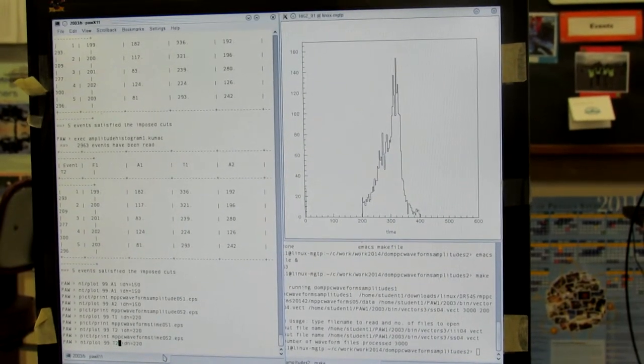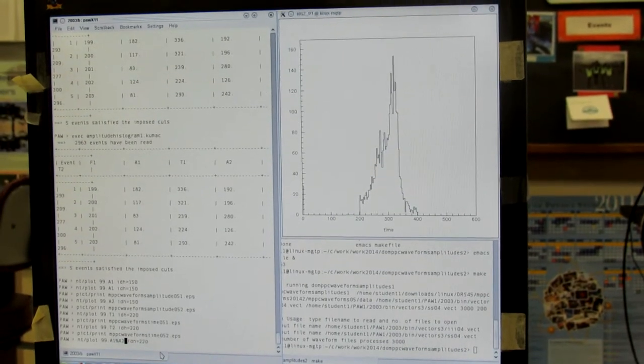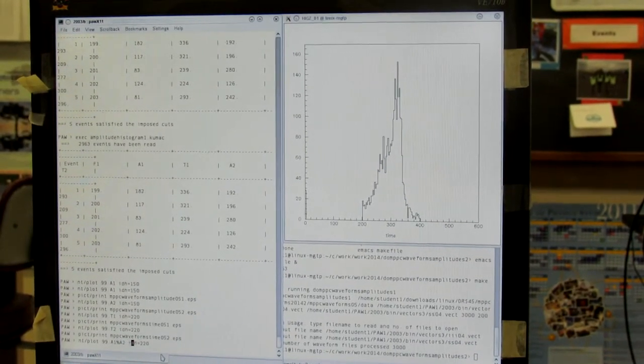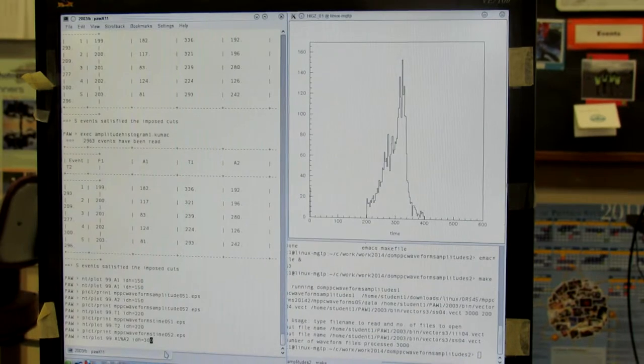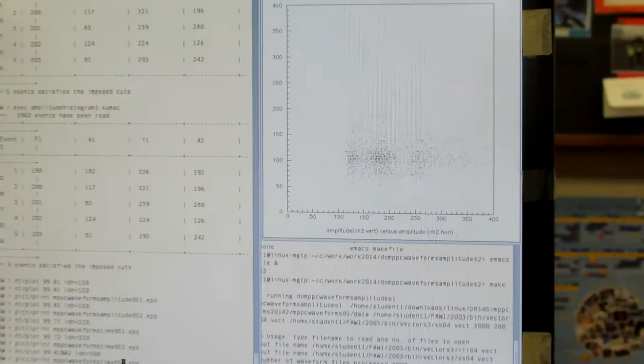Now we can do amplitude versus amplitude, which is 99. A1 versus A2. ID number is 300. Folder 5.